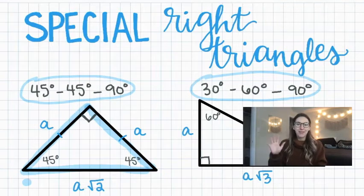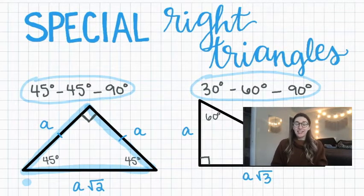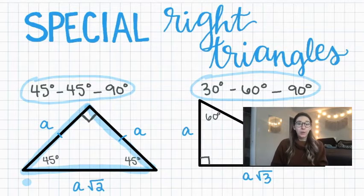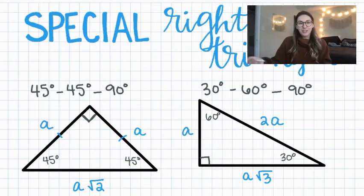Hello and welcome to Math in Five Minutes with me, Miss Wadzinski, where I break down math topics into simple, easy-to-understand explanations. Today's topic is special right triangles, and we will learn how to use the ratios created in special right triangles to solve for missing sides. So let's get started.